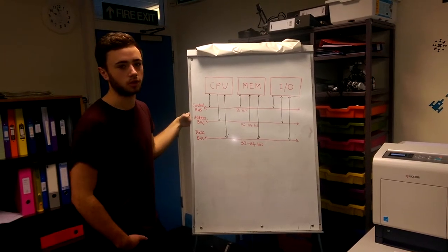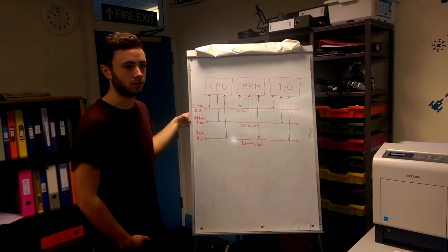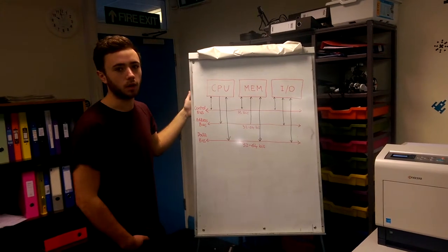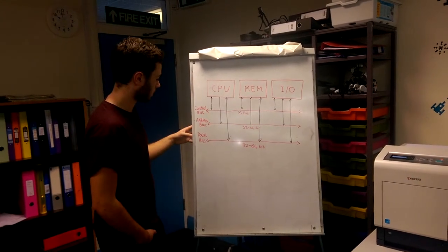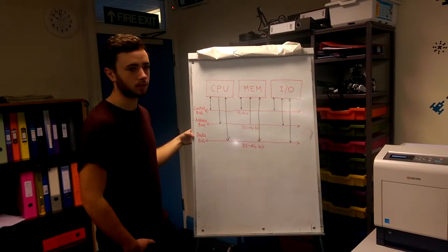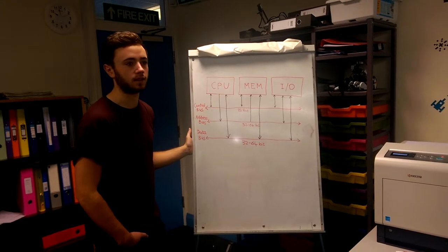The address bus is used to know where to address data to. So when you send it to memory, you know exactly where within the memory it is. The data bus is the bus that actually sends the individual data.